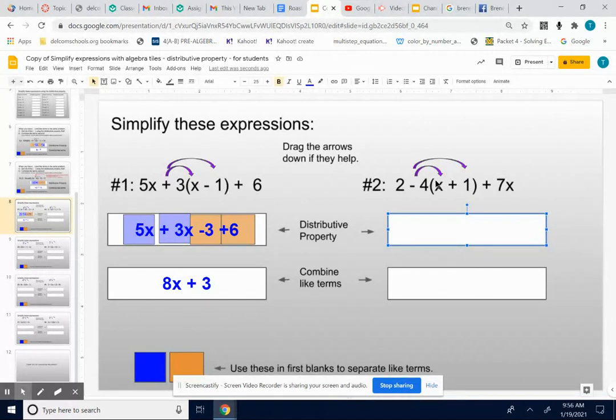You've got to always use the signs in front of things though. So I want to think of this as a negative 4 times x. Just mush those two things together. Negative 4x. And then I have a negative 4 times a positive 1. The signs are different, so that's a negative 4.